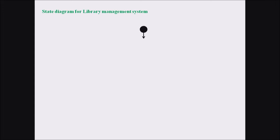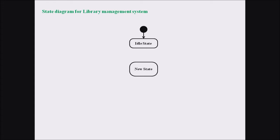In the library management system, we initialize or start with the first state represented by a dark filled circle. From that circle an arrow emerges, leading to the next state known as the idle state. The idle state is a state where no activities are currently being performed.